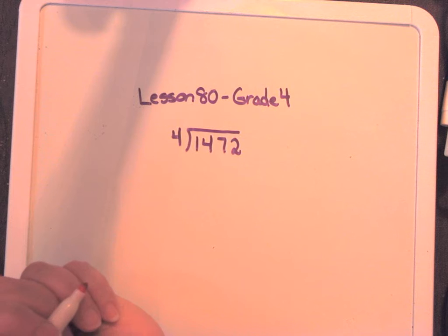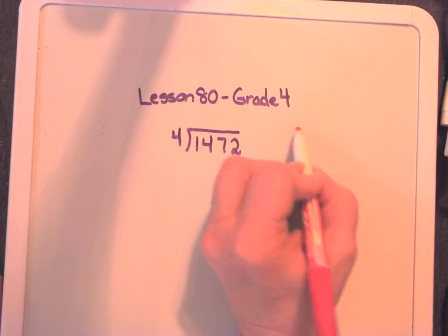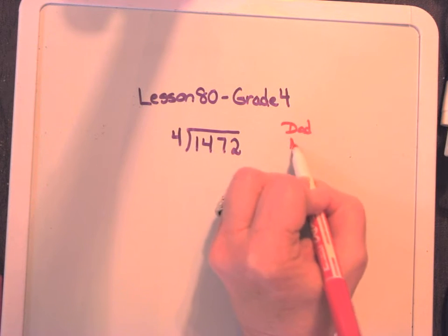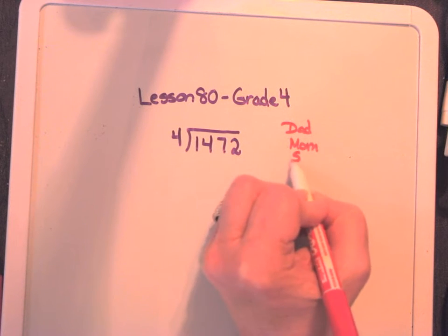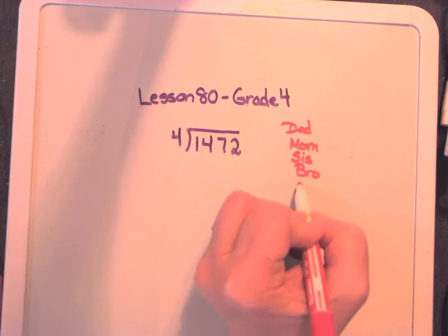And so we're going to take a look at what that looks like today. So we're going to do that same process. I'm going to write it over here. Dad, mom, sis, bro, and rover.